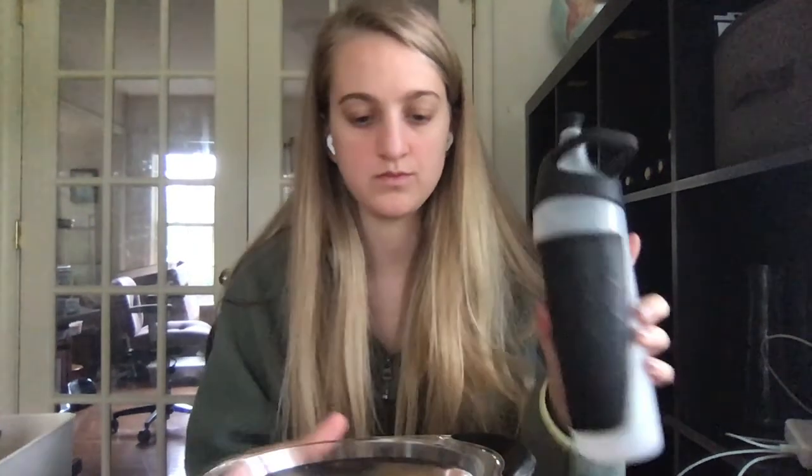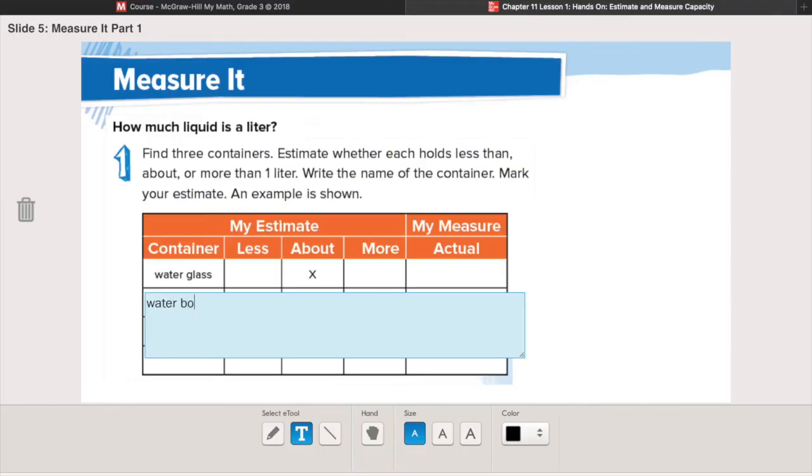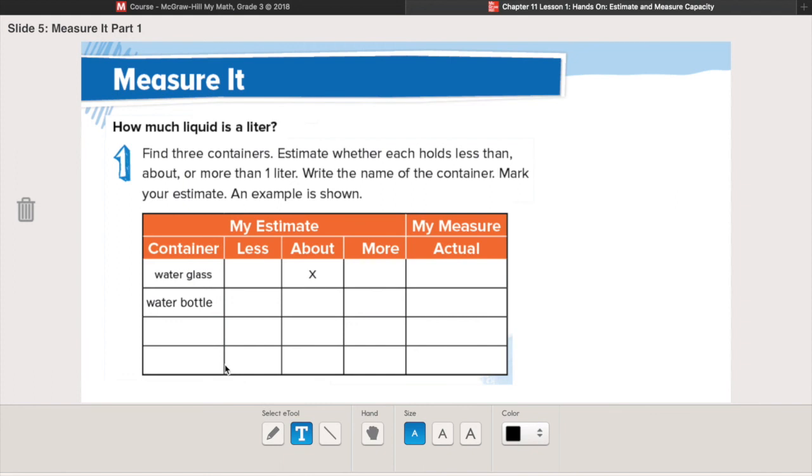So my first container that I want to measure is this water bottle. It seems like it's maybe kind of close, but what do you think? My estimate is that it is less than one liter, less than a liter. I think it might be maybe close. It's not way smaller, but I think it is less. I do. So I'm going to test that out.